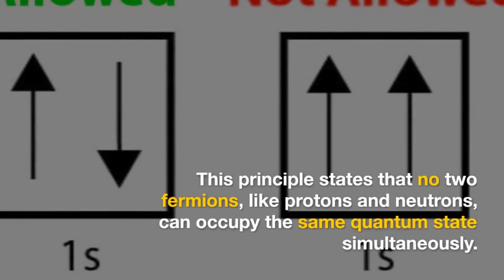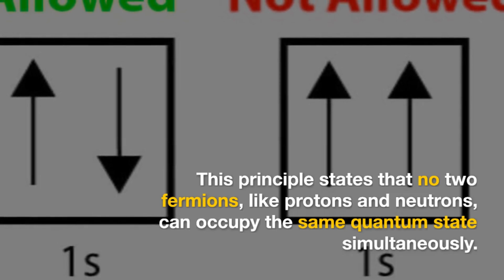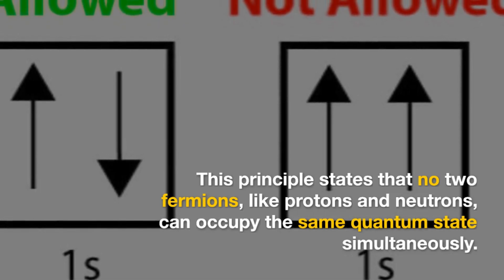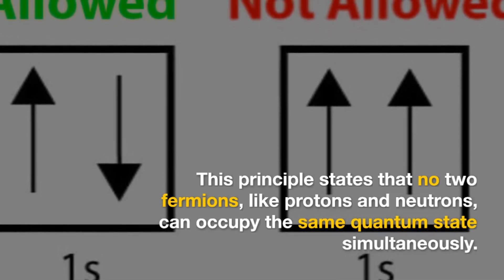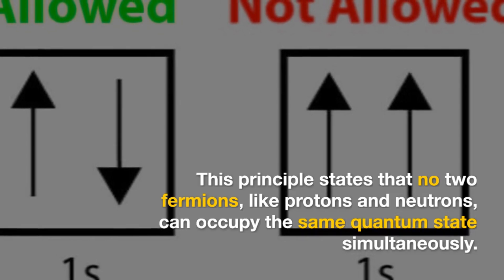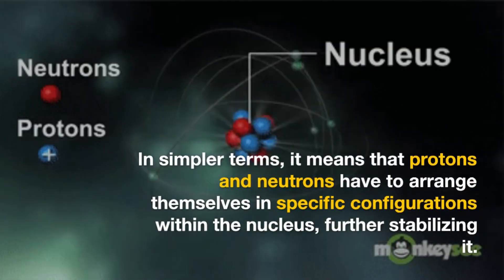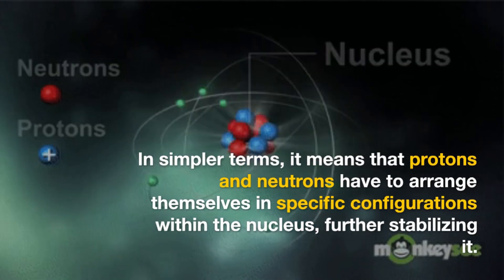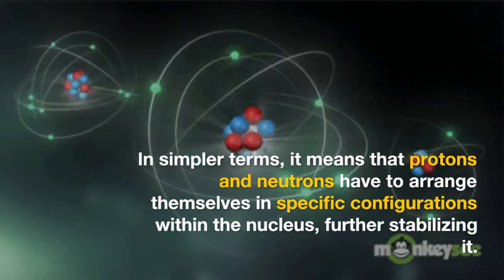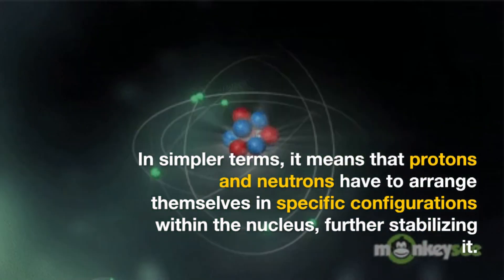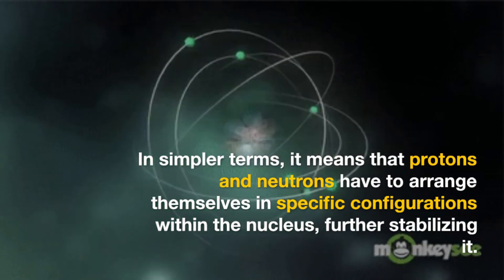This principle states that no two fermions like protons and neutrons can occupy the same quantum state simultaneously. In simpler terms, it means that protons and neutrons have to arrange themselves in specific configurations within the nucleus, further stabilizing it.